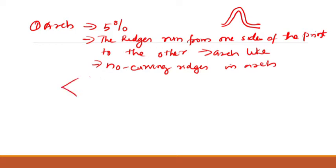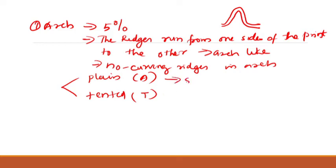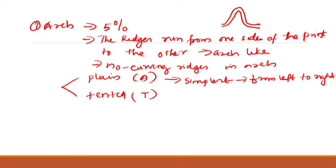There are two types of arch: plain arch and tented arch. Plain arch is the simplest of all fingerprint patterns, formed by ridges entering from the left, flowing smoothly towards the right, with a small rise in the center resembling a hill or hump.